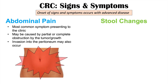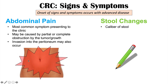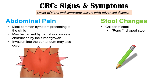Another very important sign of colon cancer is stool changes. The caliber of the stool can change — if there is a tumor within the large intestine, the stool has to pass by that tumor. The shape of the stool can become very thin, or pencil-shaped, because the tumor is an obstruction the stool must get around. As the tumor grows larger, the stool becomes thinner to pass that obstruction, especially if the tumor is in the left colon.